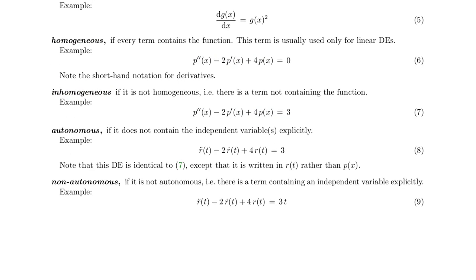Another distinction is between autonomous and non-autonomous. This relates to the property whether the independent variable appears explicitly in the differential equation or not. Here you see two very similar equations except for the t. In the upper equation t only appears as the argument of r, while in the lower equation it appears explicitly and that makes this equation non-autonomous.